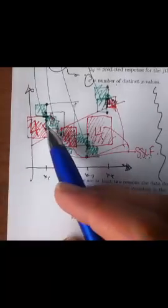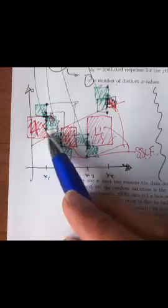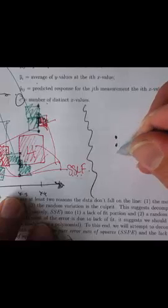So it turns out that the sum of the green areas and the sum of the red areas comes out to be the error sum of squares. How does this look if you have a nice linear relationship, however, you know, what if you had something like this?